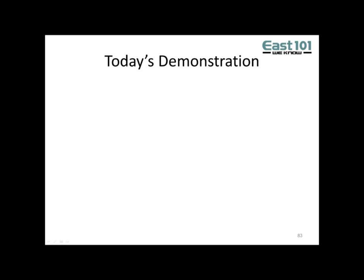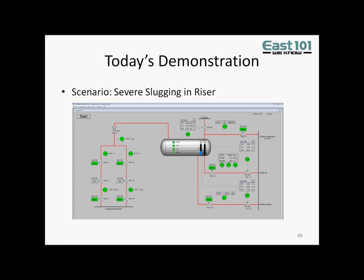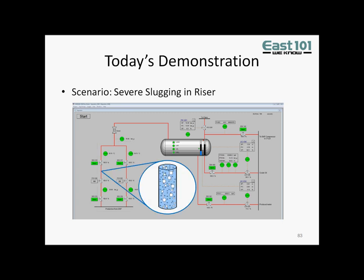Before we begin the actual demonstration, here is some background information on the case. The scenario being presented is one of severe slugging in the riser, which is shown in the black rectangle. The facility is an FPSO producing during early field life, which requires gas lift to operate. As long as there is gas lift, production is generally steady. If there is a sudden loss of gas lift, severe slugging is expected. This is characterized by large oil slugs, followed by surges of high pressure gas entering the inlet separator.